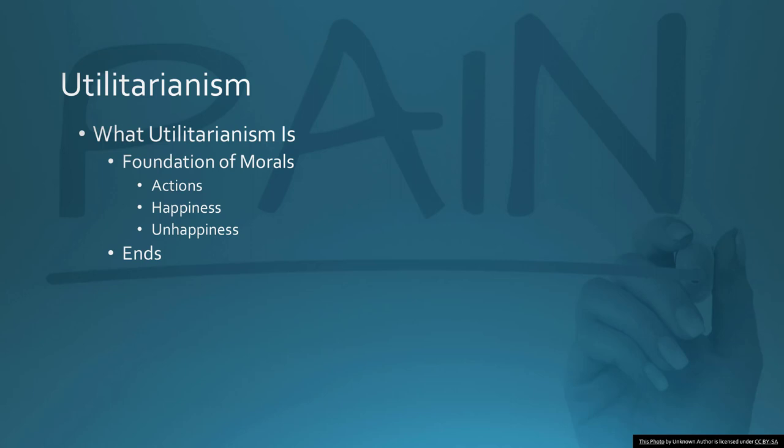Utilitarianism, or at least John Stuart Mill's version, and just an excerpt from his work. Mill begins by addressing the question of what utilitarianism is, and his answer is this: that the foundation of morals is utility, or what he calls the greatest happiness principle.